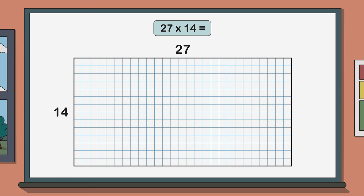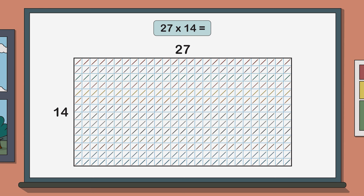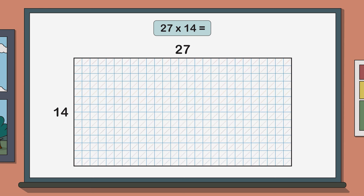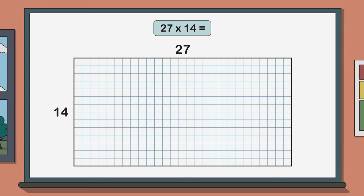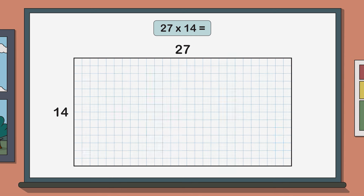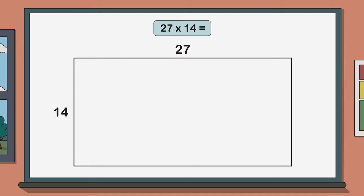Each of these squares represents one pencil in our whole class set and if we were to go through and count up all these squares one by one we would find the answer to our multiplication problem. But let's not do that. Instead we're going to partition or split up our rectangle into smaller rectangles to give us four easier multiplication problems to solve.